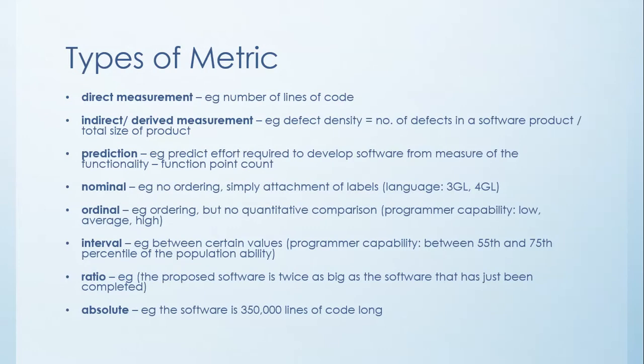Now you have several different kinds of metrics. So don't get thinking that there's only one kind. Direct measurement. So for example, you could measure the number of lines in your source code. We'll get that when talking about direct product metrics.